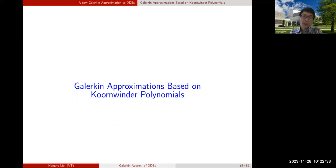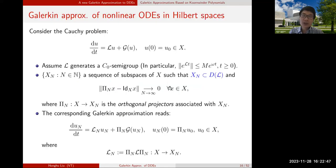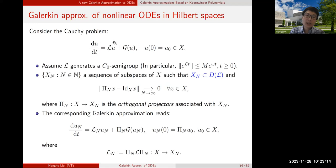Now we use the Koornwinder polynomials to build Galerkin approximations and analyze convergence. There is a general result independent of the specific Galerkin approximation of the DDE. We consider nonlinear ODEs in Hilbert space with a linear part and nonlinear part where U lives in some Hilbert space — if finite dimensional we get finite-dimensional ODEs; if infinite dimensional, the DDE will be of this abstract ODE form.